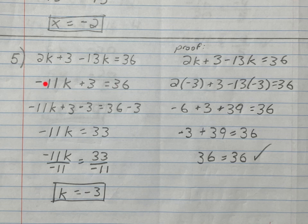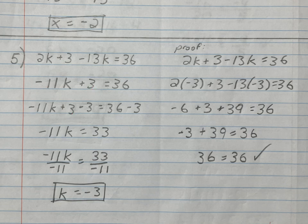Now it's a two-step problem. k is being multiplied by -11 and 3 is being added to it. The last thing that happens is adding 3, so that's the first thing we undo. We write -11k + 3 minus 3 equals 36 minus 3 — the same thing on both sides with the change at the end. The +3 and -3 cancel out, leaving -11k = 33.